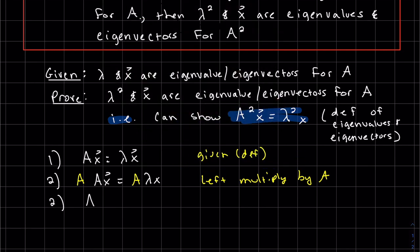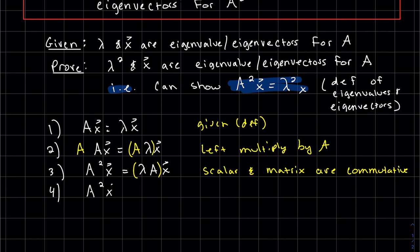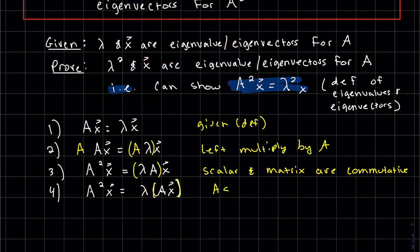So this step is because lambda is a constant, a scalar and a matrix are commutative. So we know that's not true of two matrices, but it is true of a scalar and a matrix. So what you see here is instead of grouping these two, I'm grouping the last two, and that's allowed in matrix multiplication. So this is the associative property.